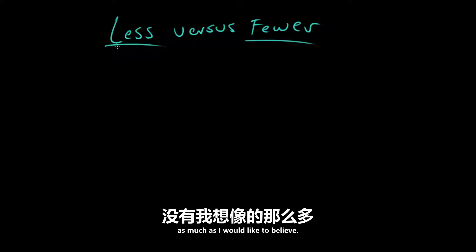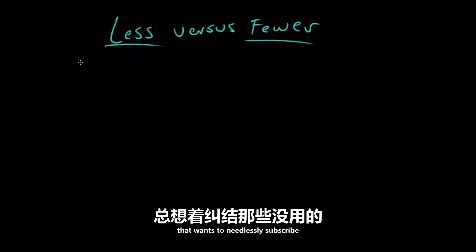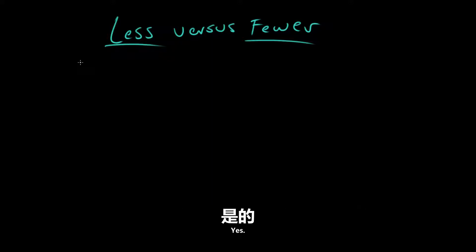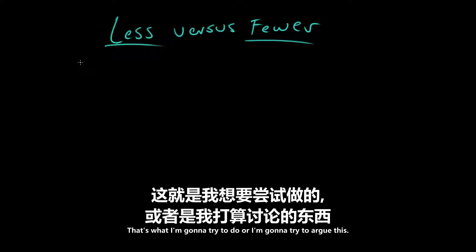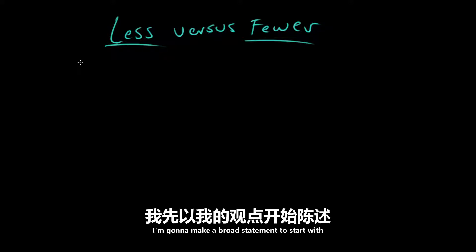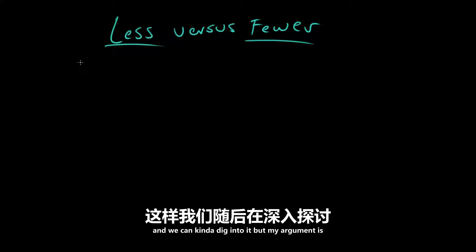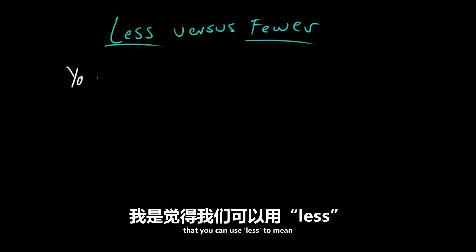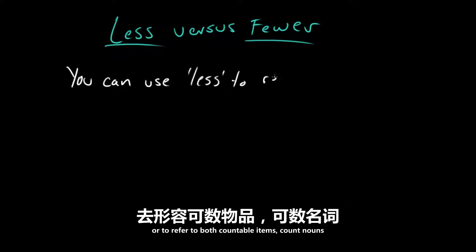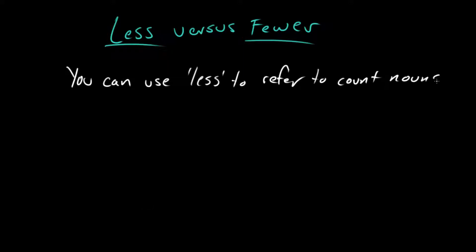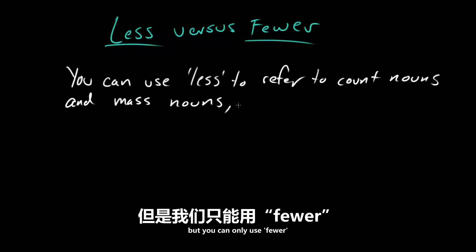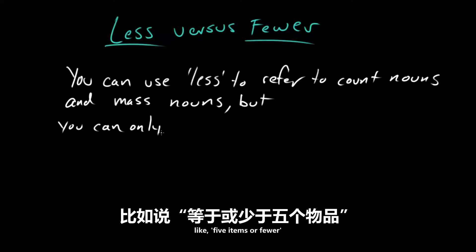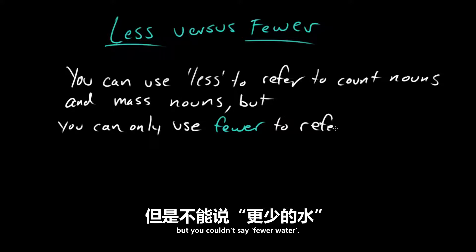As much as I would like to believe — look, I'm the last person that wants to needlessly subscribe to grammar superstitions. Our job is to go around with our little needle of truth and pop them. I'm going to try to argue this. My argument is that you can use less to refer to both countable items — count nouns — and to larger mass nouns. But you can only use fewer to refer to count nouns, like five items or fewer, but you couldn't say fewer water.